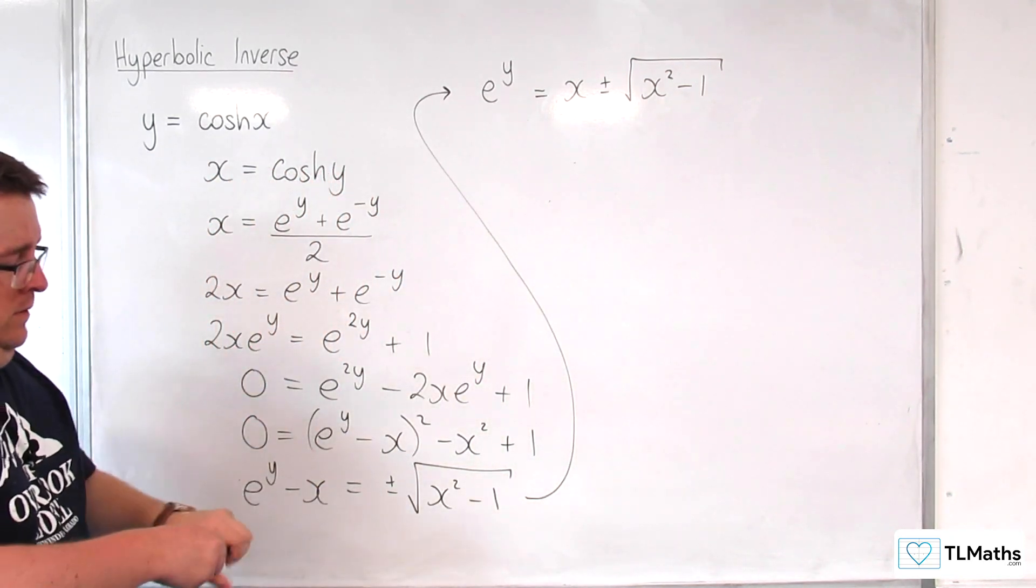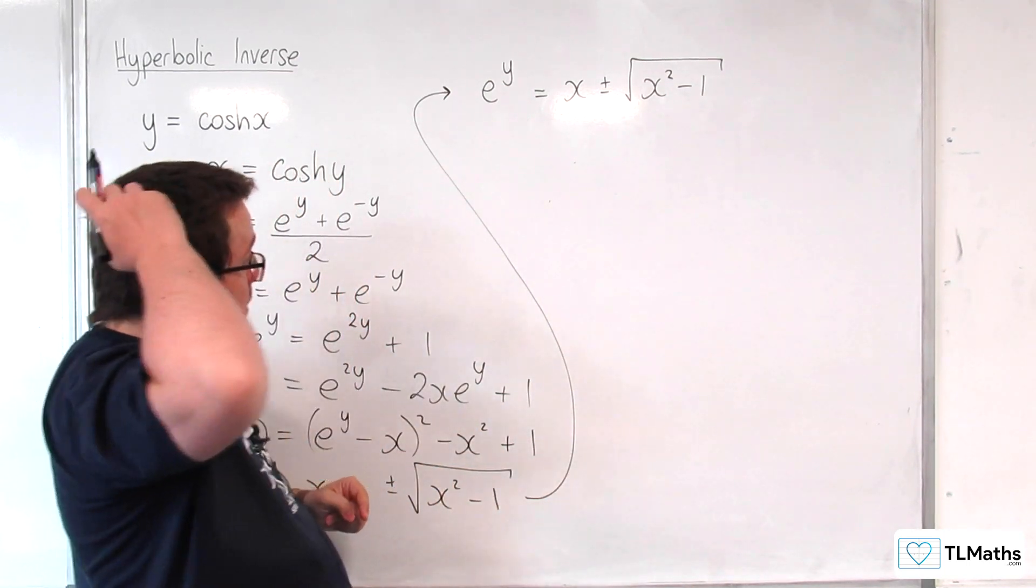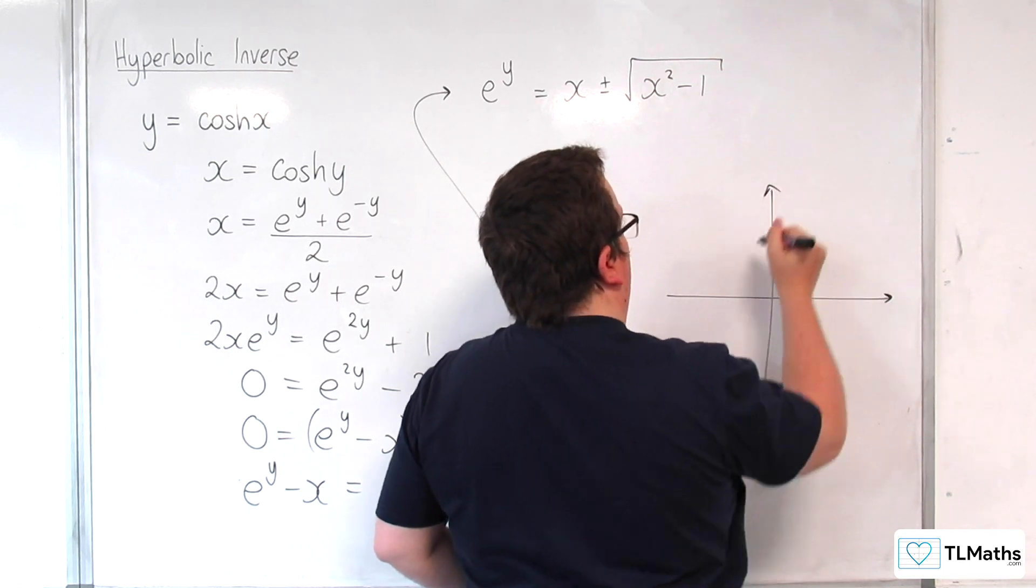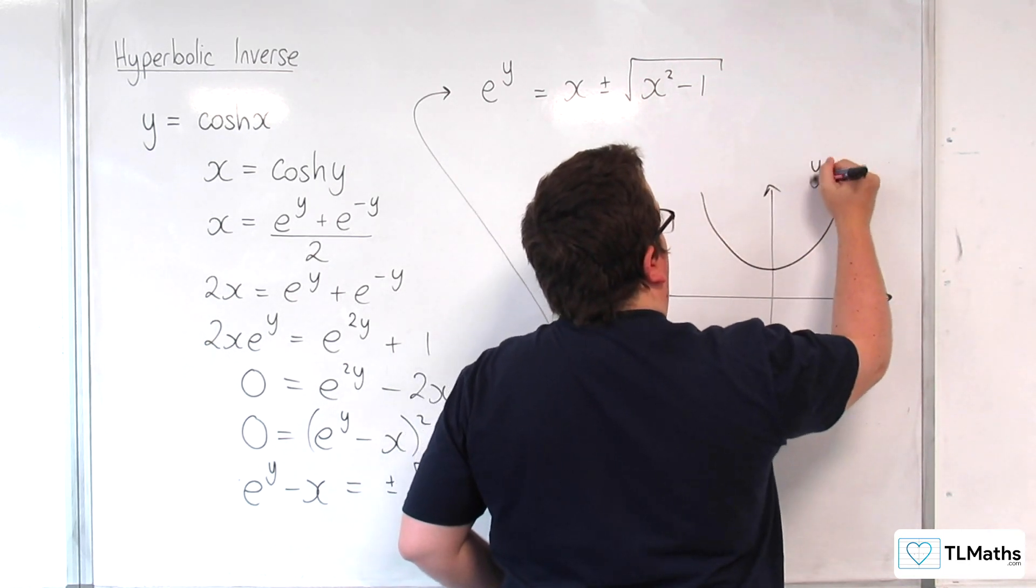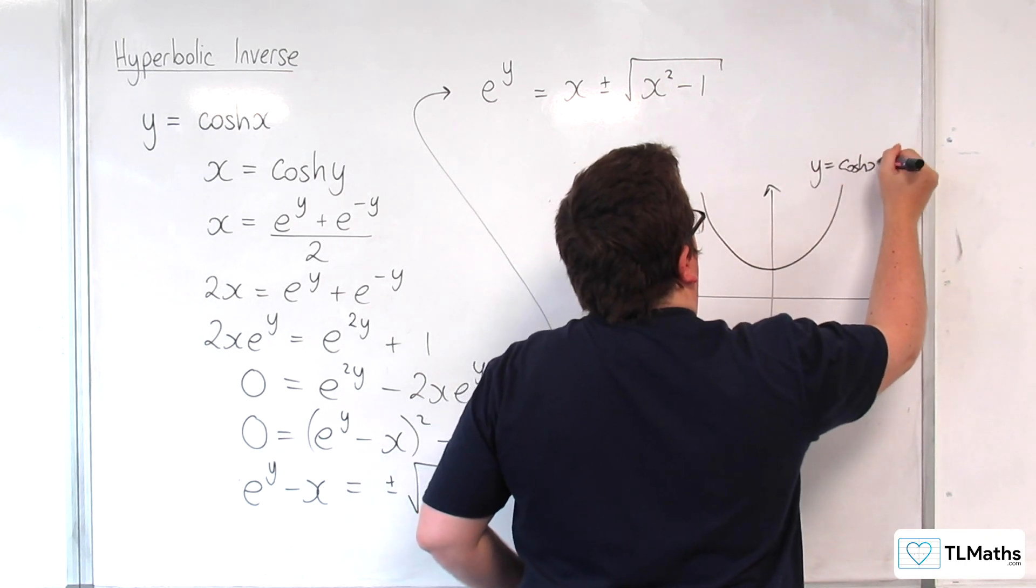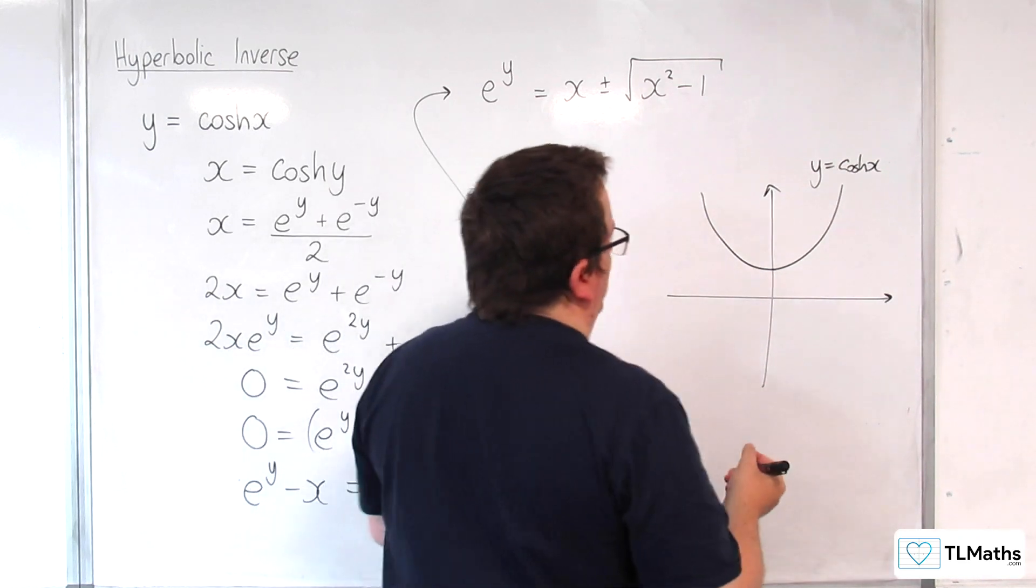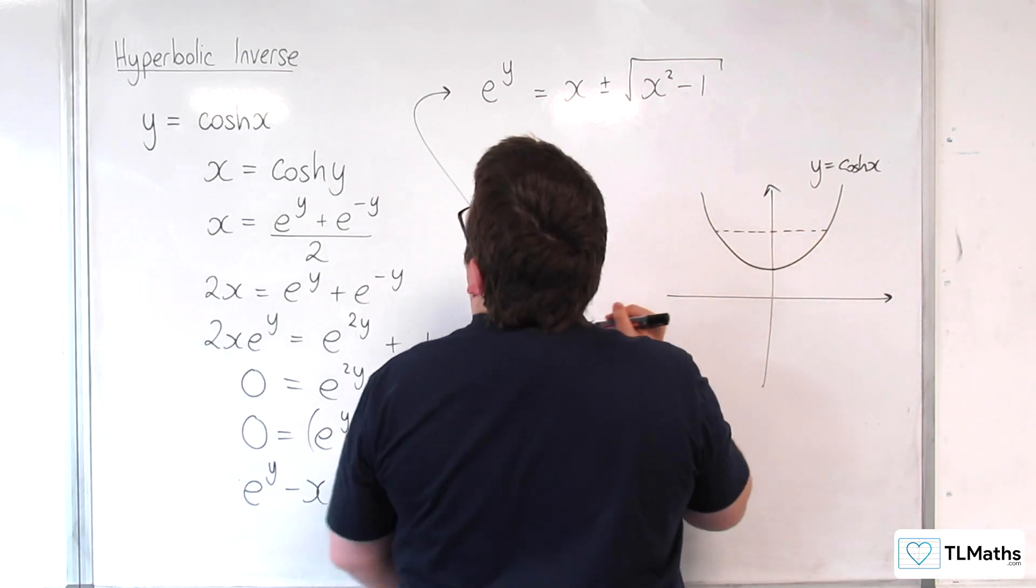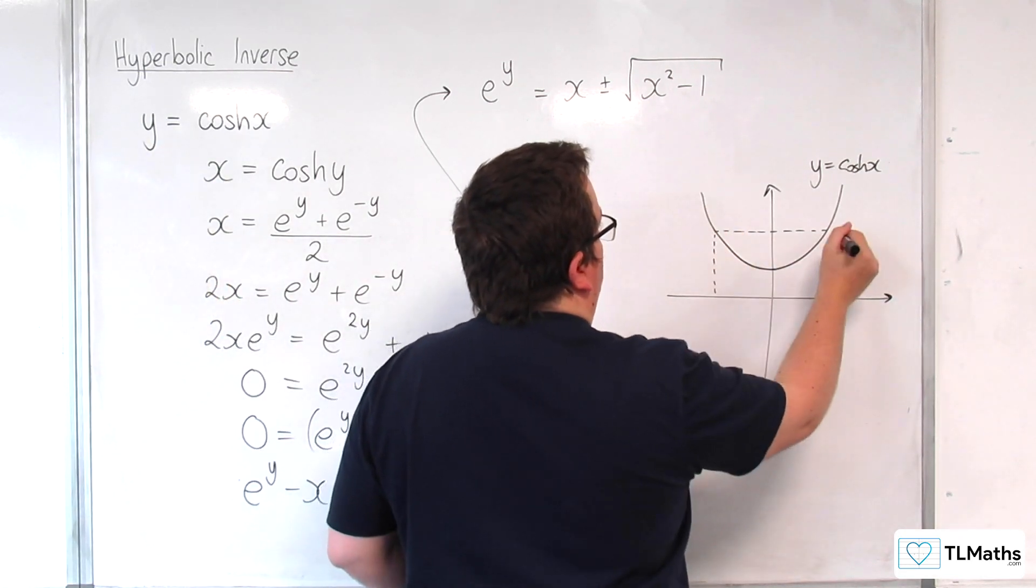Now, the reason for that is that for our curve, y equals cosh x, remember we're getting two valid results here. So, for a value of k, or value of y, we are getting two results.